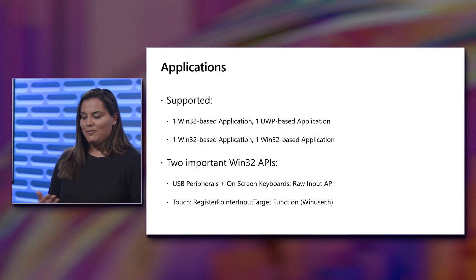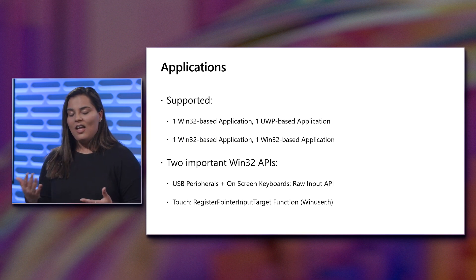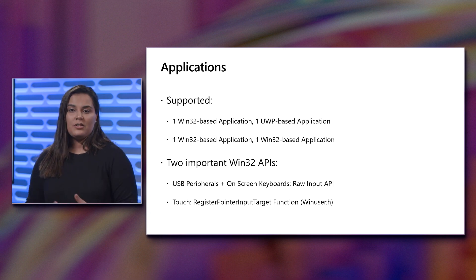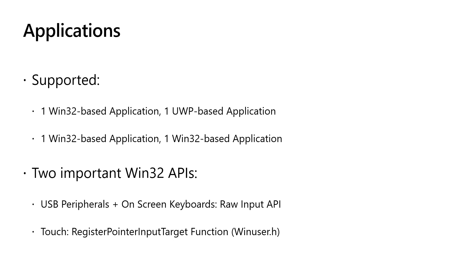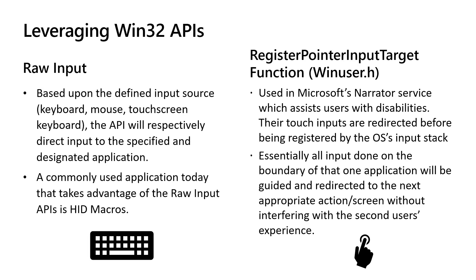Now let's get into the technical details under the hood. We support one Win32 and one UWP, as well as two Win32 applications running simultaneously. There are two important APIs integral to making this work. The first is the Raw Input API, responsible for USB peripherals and on-screen keyboards. The second is the RegisterPointerInputTarget function, part of the WinUser.h class, which helps orchestrate touch input. The Raw Input API defines the input source — whether keyboard, mouse, or touchscreen keyboard — and directs it to the specified application, ensuring it's redirected properly. This is also commonly used in HID macros for remapping keys and functions.